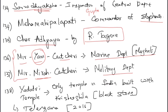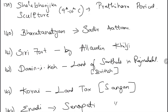Yadadri Temple is the only temple in India built with Krishna Sheila (black stone), built in Telangana around 2016. In the Pratihara period (9th–10th century), the Shalabhanjika sculpture was created. Siri Fort was built by Alauddin Khalji.